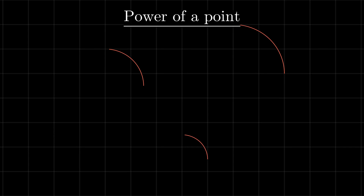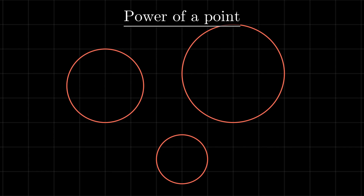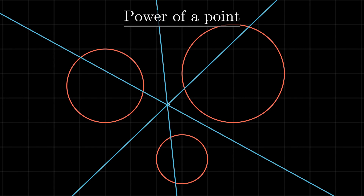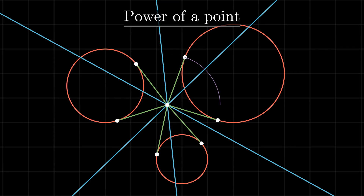In case of three circles, the three radical axes, one for each pair, all meet at a single point. This concurrency gives a unique point whose power is the same with respect to all three circles. If that point is outside the circles, tangents from this point to all three circles will be of equal length. This point is called the radical center of the three circles and is fundamental to Gigan's solution of the Apollonius problem.